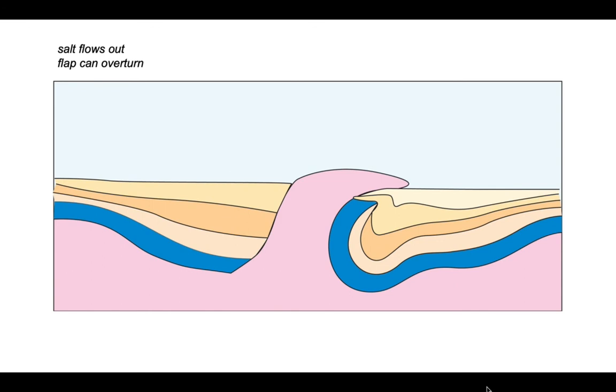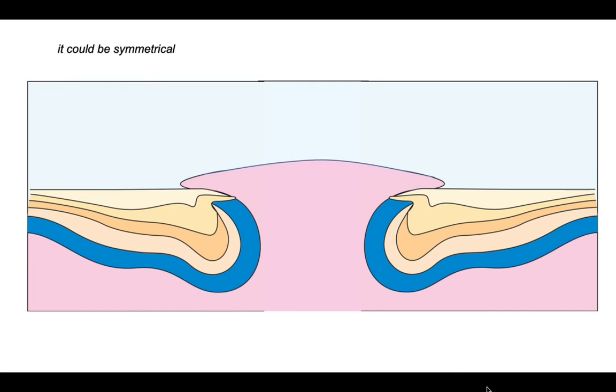Well, this is an asymmetric system. We have that pseudo fault on the left and the flap on the right. But actually, it could be symmetrical and you could have a system like this, which has got a flap on both sides. And this is the end case where the salt has flowed out equally on both sides. In this particular case, we've got two overhanging margins of flaps beneath that salt dome.